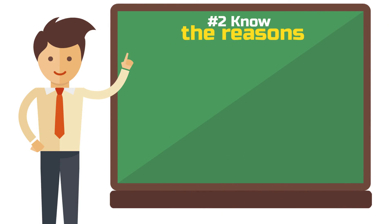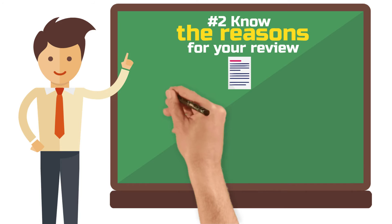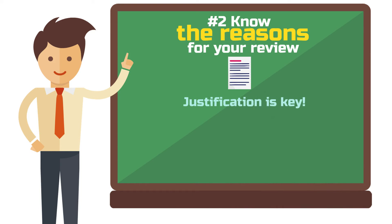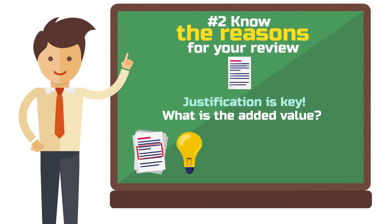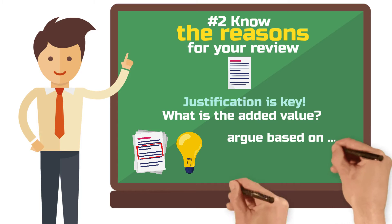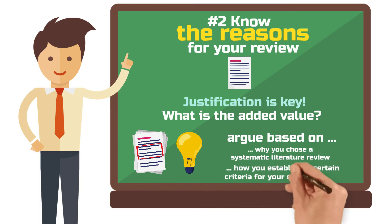Step 2: Know the reasons for your review. Your work will only be considered good if you can clearly argue why you have chosen a systematic literature review approach and what added value it brings to you and your readers. If you are not sure where to start, read the research design sections of other successfully published review articles. This will give you an idea of how you can argue your case. The argument in the methods section also depends on the objective, so consider which of the aforementioned objectives applies to you and argue based on that why you chose a systematic literature review approach and how you established certain criteria for your search process.